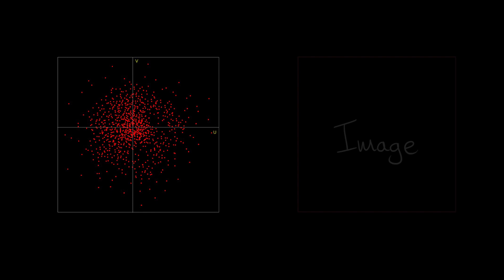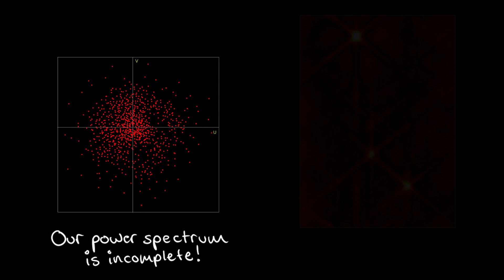You might think we could simply inverse Fourier transform the visibility data to produce an image, but because the measured visibilities only sample a discrete portion of the UV plane, transforming into the image plane introduces ringing, side lobes, and general messiness into the image.